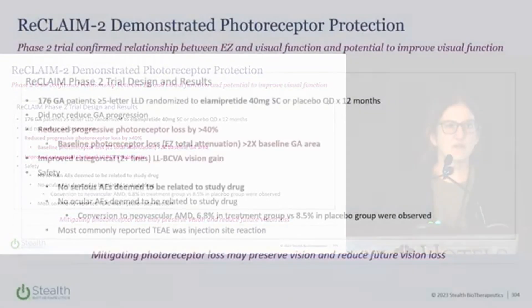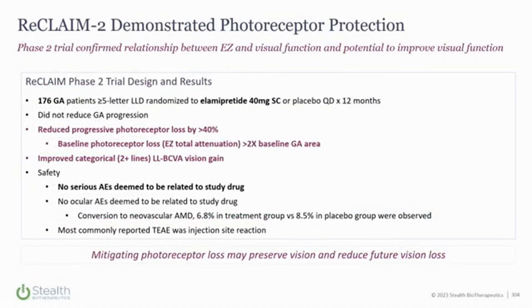The Phase 2 clinical trial enrolled 176 patients with non-central GA. We did not see a separation on geographic atrophy. We did, however, see a photoreceptor protective signal looking at ellipsoid zone and total attenuation, and that was associated with changes in visual function.